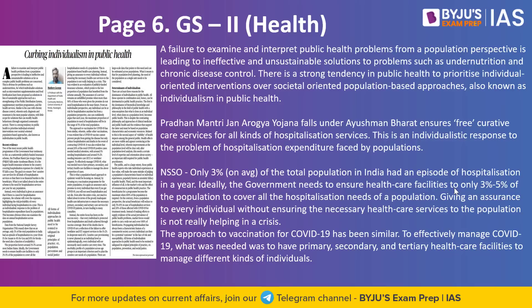The author says we have failed to examine and interpret public health problems on a large scale in India, which is why most of our vaccination programs have not been very successful. Even the COVID-19 vaccination program, though a success, could have been much better. The author says we are more focused on individuals — everyone equally — which is not the aim of public health. Public health means focusing on the population most at risk first, and then moving on to others.